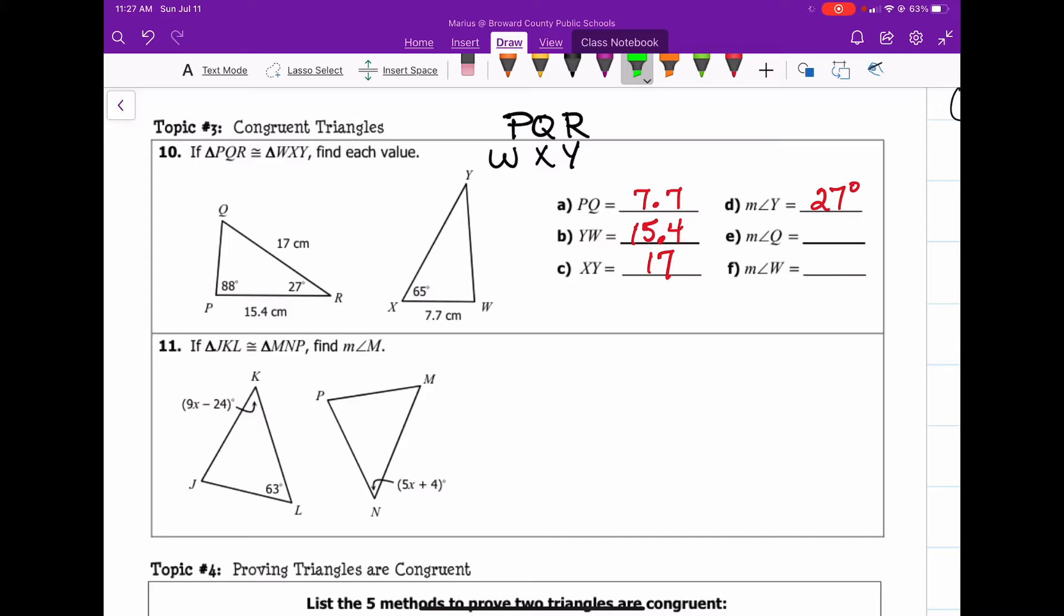Next is angle Q. Angle Q is the same as angle X. So angle Q and angle X. Angle Q is going to be 65 because angle X is 65 degrees. And remember, these triangles are congruent. For congruent triangles, everything that I'm displaying right now works for any set of congruent triangles. The matching in the pairs, all the way down to the angles. Angle W is the same as angle P. So it's 88 degrees.